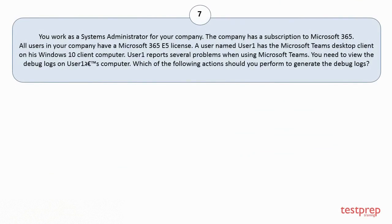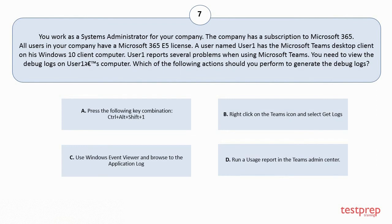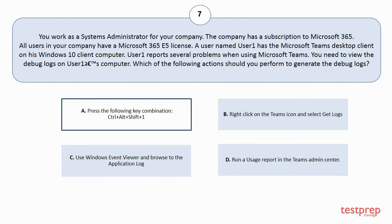Question 7. You work as a systems administrator for your company. The company has a subscription to Microsoft 365. All users in your company have a Microsoft 365 v5 license. A user named UserOne has the Microsoft Teams desktop client on his Windows 10 client computer. UserOne reports several problems when using Microsoft Teams. You need to view the debug logs on the computer. Which of the following actions should you perform to generate the debug logs? Your options are: A. Press the key combination Control plus Alt plus Shift plus 1. B. Right-click on the Teams icon and select Get Logs. C. Use Windows Event Viewer and browse to the Application Log. D. Run a usage report in the Teams Admin Center. The correct answer is Option A.